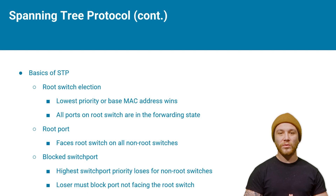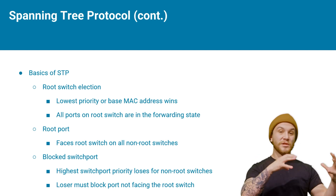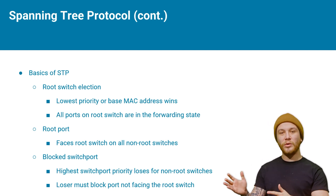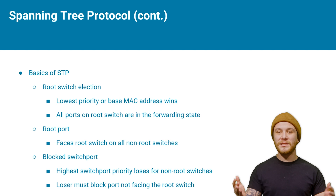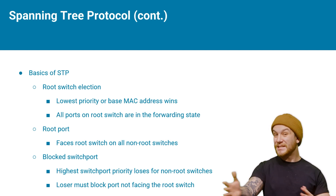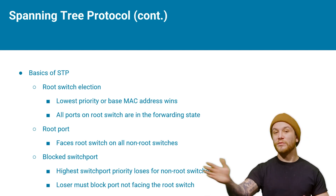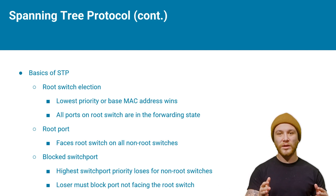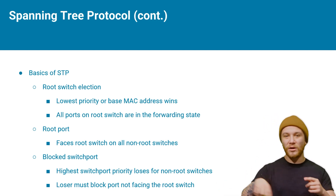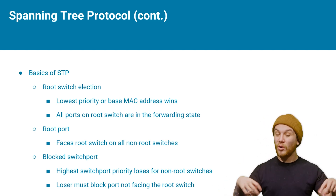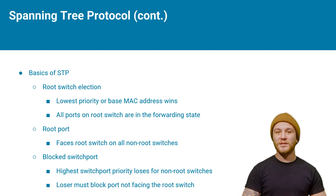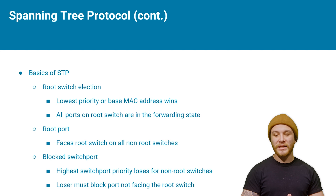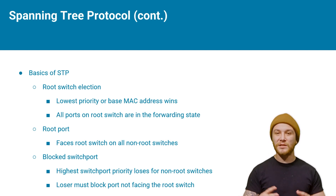Every other switch except the root switch has to figure out which port it needs to block. Taking the perspective of another switch in that topology: it identifies that Switch 2 is the root switch, so it immediately sets that interface to a root port — meaning it's designated and going to forward traffic, because all tree branches should go back to the root. Then it's going to compete with any other switches connected to it. In our topology, the two switches that aren't root open the port facing the root switch and then decide between themselves which one is going to block a port.